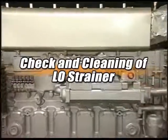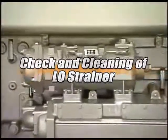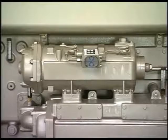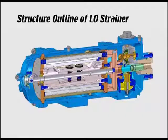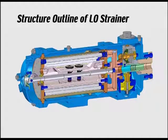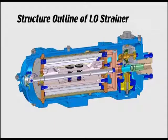The lube oil strainer fitted on this engine is an automatic backwashing filter. Lube oil is filtered by running from the inside to the outside of the strainer element. The cleaning nozzle rotates during operation, driven by a turbine powered by lube oil pressure. At the tip of the nozzle, the flow of lube oil is reversed, dirt is discharged, and filtration and cleaning are constantly repeated.